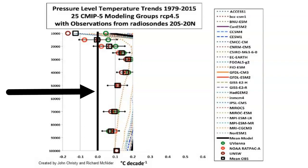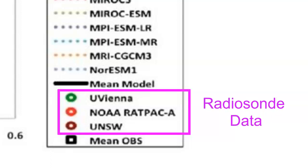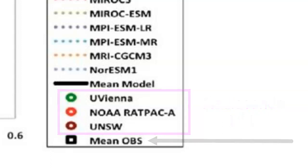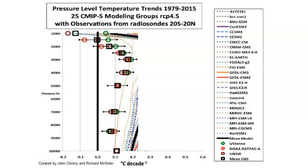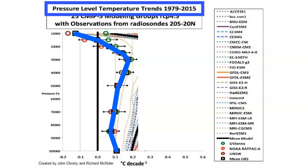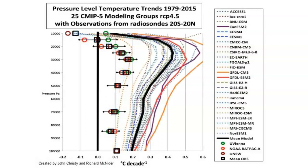Let's ignore the squiggly lines for now and focus on the reference information. This thick black line represents no temperature change. The small green, red, and purple circles represent three different radiosonde data sets, and the small black box is their average. I will now connect those average black boxes with a thick blue line — this thick blue line is the actual temperature change of our tropical atmosphere from 1979 to 2015, showing mostly warming throughout but some cooling at the highest levels.